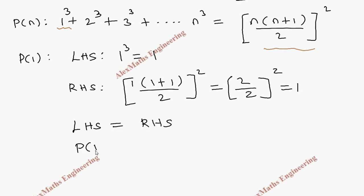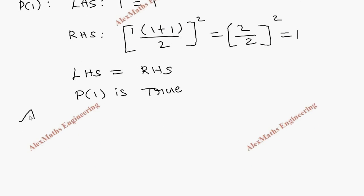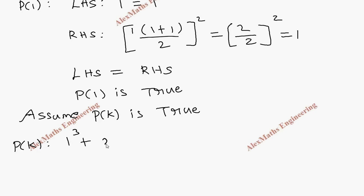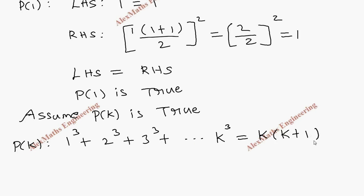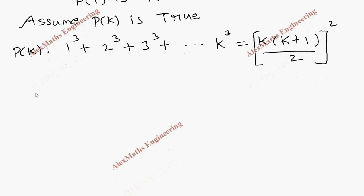We find LHS and RHS are the same. Since LHS equals RHS, we can say P of 1 is true. As the next step, we assume P of K is true. When P of K is true, the expression is: 1 cube plus 2 cube plus 3 cube plus dot dot dot plus K cube equals K times (K plus 1) divided by 2, whole square.